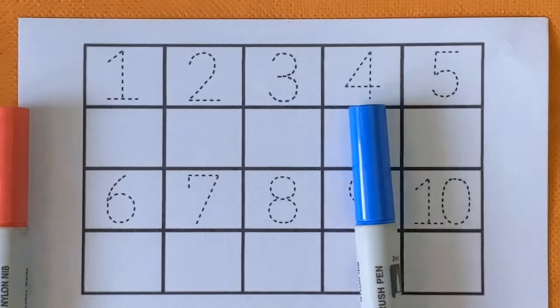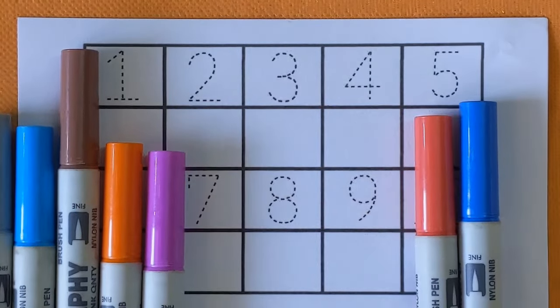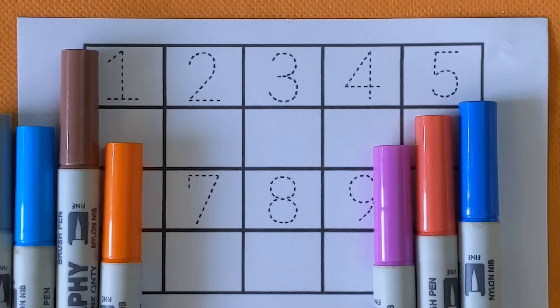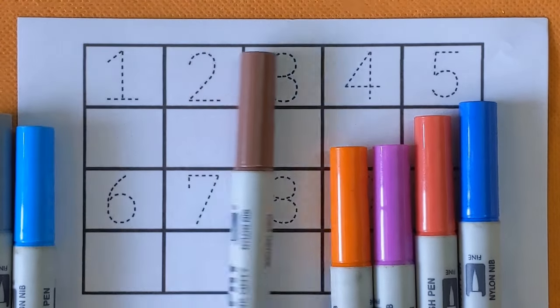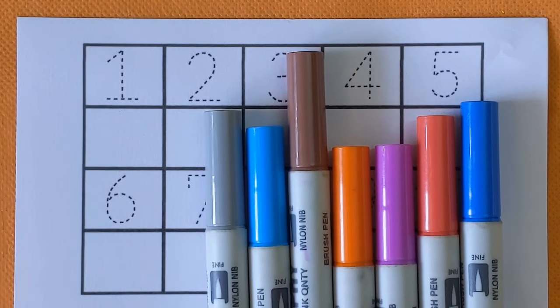At first, we will learn some colors name. This is blue color, red color, purple color, orange color, brown color, sky blue color, and gray color.